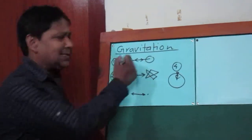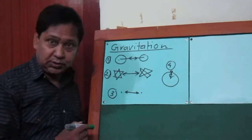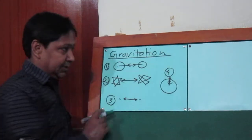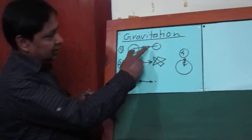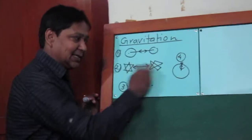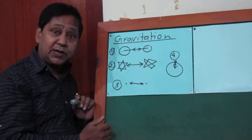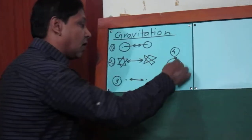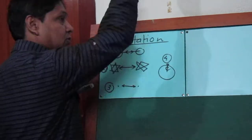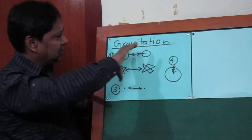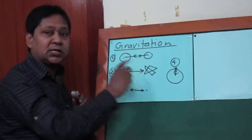Now let's talk about the characteristics of gravitational force or gravitation. Look at this set of bodies — heavenly bodies attract each other, stars attract each other, dust particles also attract each other, and a body also attracts the earth towards its center. But what is the reason for the attraction force between all these bodies?